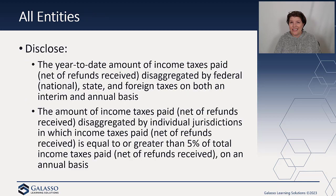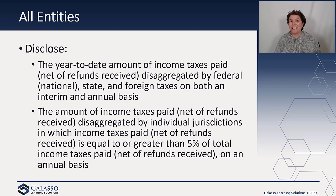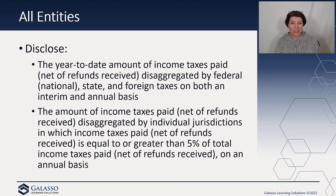In addition, all entities — including private companies — would have to provide the year-to-date income taxes paid, net of any refunds, disaggregated by federal or national, state, and foreign taxes on an interim and annual basis. If you don't prepare interim financials, you don't have to worry about that. Then the amount of income taxes paid, again net of refunds, disaggregated by individual jurisdictions where income taxes paid is equal to or greater than five percent of the total income taxes paid — further disaggregating into what is causing these income tax payments.